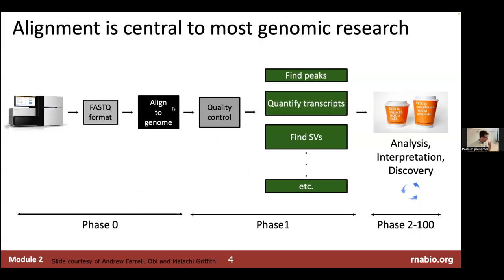Alignment is really a common feature of bioinformatics and genomics analysis. A very common workflow has phase zero — generate your sequence data, get raw FASTQs — and then the most common next step is some kind of alignment: alignment to a genome or a transcriptome. Then you do quality control, and from there you go down different paths like peak finding, quantifying transcripts, or finding variation.